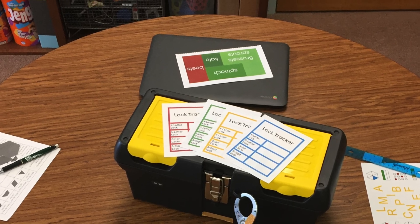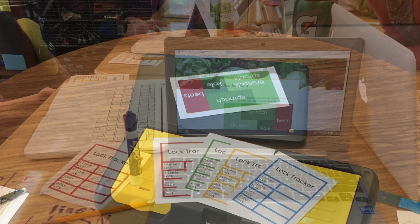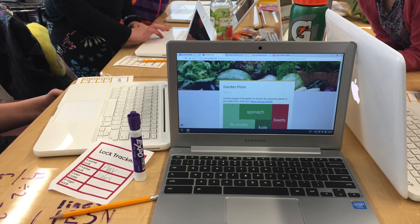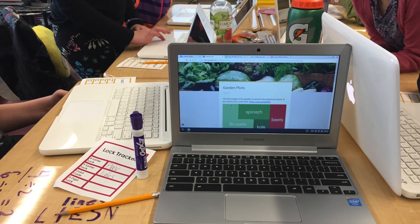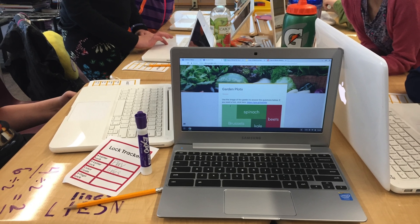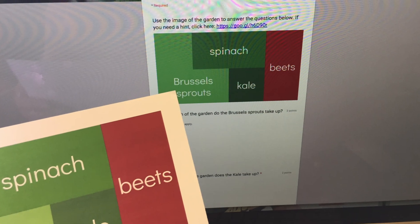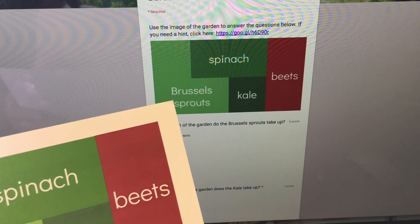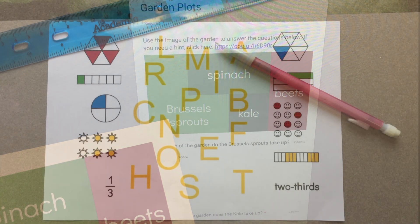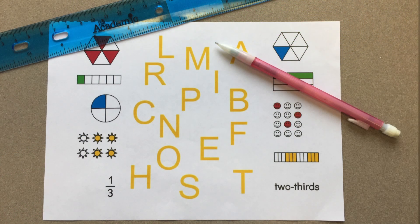Assign a station for this puzzle. Students will need a Chromebook or other computer with access to the internet. In the area where this puzzle will be played, lay out the printed garden plot along with the QR code or invisible ink URL.